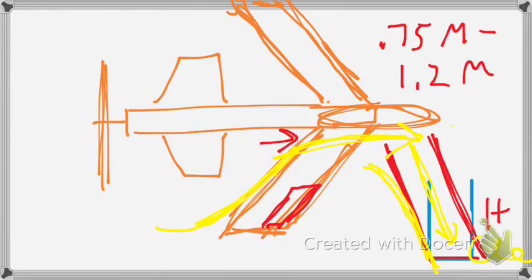Some of the disadvantages of the forward swept wing, primarily they're structural. With that leading edge forward of the trailing edge, we have a lot of wind resistance associated with that tip being forward of its mounting point. There's some leverage associated with that, with this distance here.